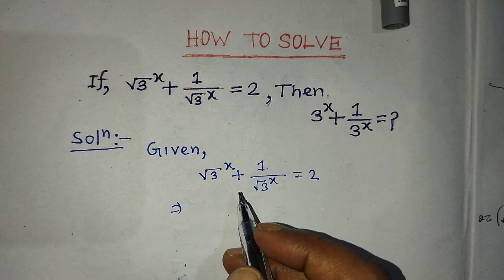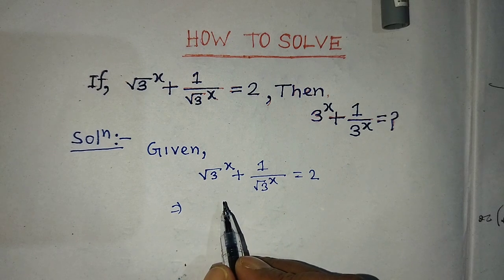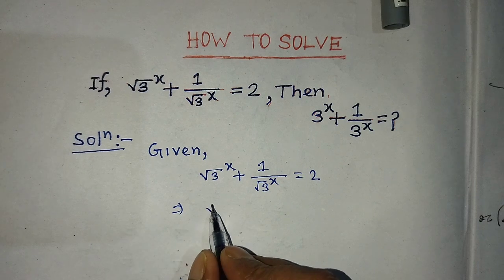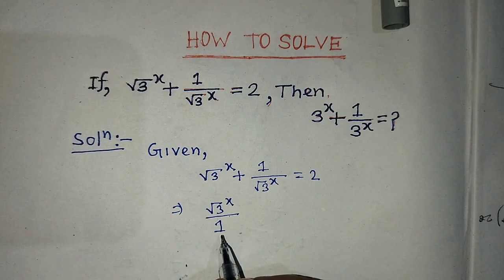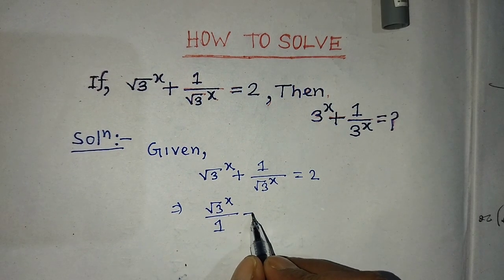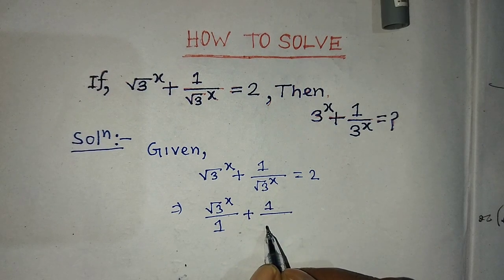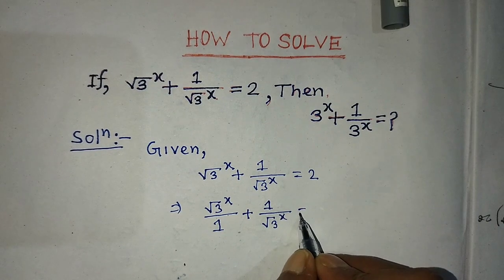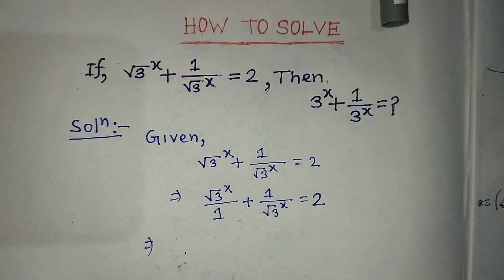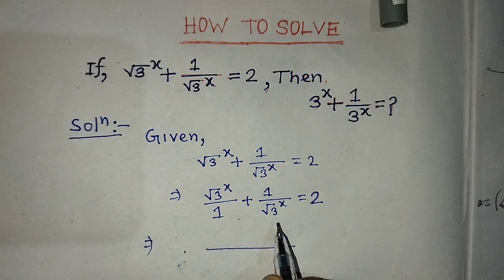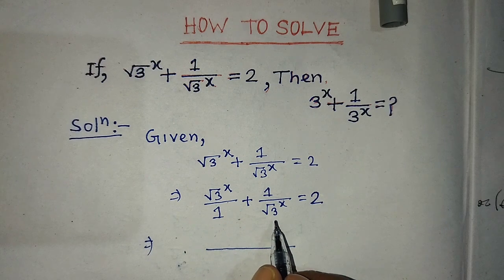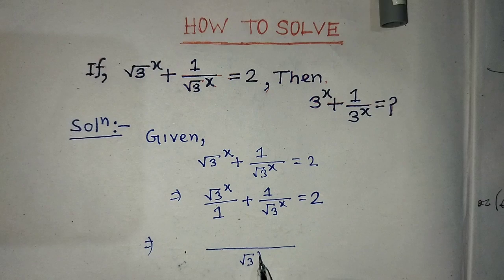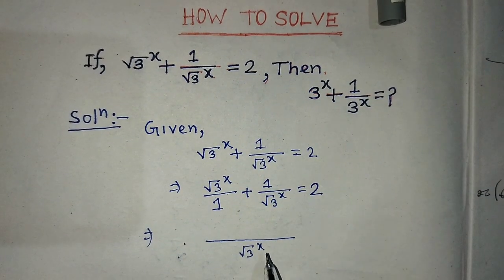On the left hand side, we have to write both terms in fractional form. We can write the first term as root over of 3, whole to the power x, over 1 — since there is no denominator, we take 1 in the place of denominator — plus 1 over root over of 3, whole to the power x, equal to 2. To simplify the left hand side, we find the LCM of 1 and root over of 3, whole to the power x, which is root over of 3, whole to the power x, and write it in the denominator.